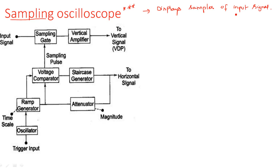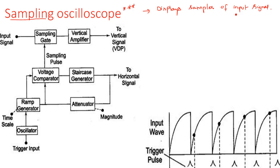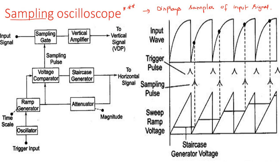You can better understand the block diagram operation by following the output waveforms in parallel. The input signal that you want to display on the CRT screen is applied to the vertical section — the input signal always goes to the vertical deflection system, while the horizontal deflection system always has a sweep circuit. The input signal is applied at the sampling gate; the output of the sampling gate is given to the vertical amplifier and then to the vertical deflection plates.